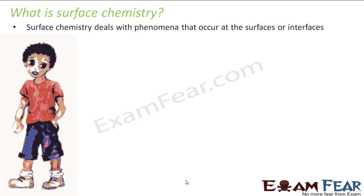What is the definition of surface chemistry? Surface chemistry deals with phenomena that occur at the surface or interface. When talking about your skin, you're talking about the surface of your skin. Or when talking about the surface of a plastic where water gets adsorbed. Surface chemistry is a branch of chemistry that deals with phenomena that occur at the surface or interface.